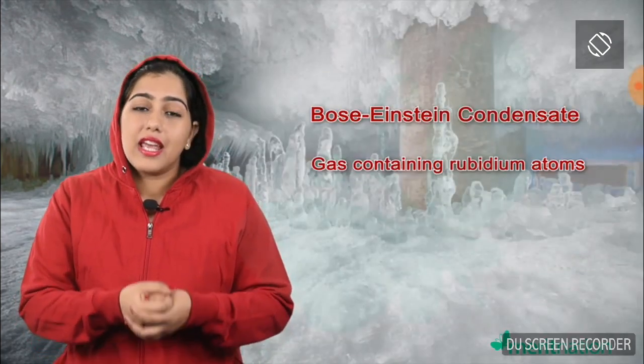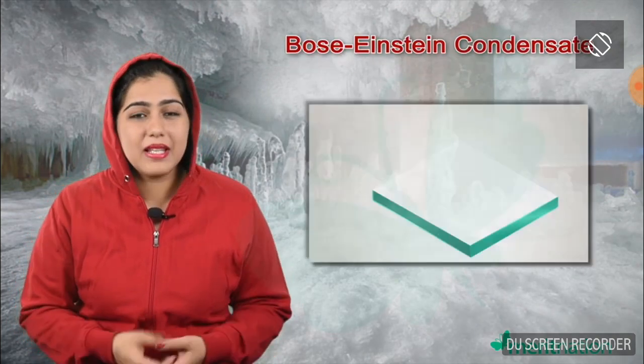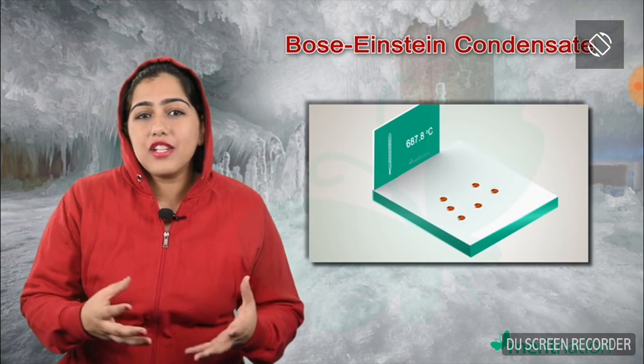In 1920, Satyendra Bose and Albert Einstein predicted a new state of matter, but they could not prove its existence. It was only in 1995 that scientists Cornell and Wieman created what is known as the fifth state of matter, the Bose-Einstein condensate, using a gas containing rubidium atoms.